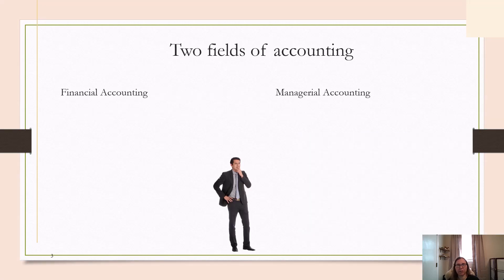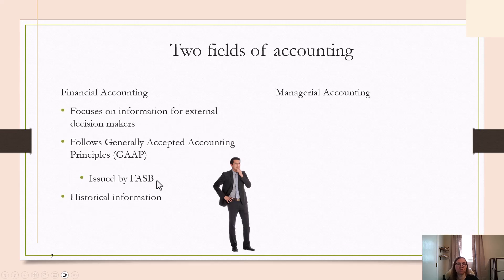There are two fields of accounting. There's financial accounting, which is more focused on information for people outside of the company — external decision makers. External decision makers would be tax authorities, creditors, potential investors, people like that.